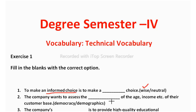The next one: the company wants to assess the blank of the age, income, etc. of their customer base — democracy or demographic? Assess means evaluate. Democracy means control of an organization by the majority of its members, so we cannot evaluate that. Demographic means the structure of the population — their age, income, and everything about customers. So the correct answer is demographic.